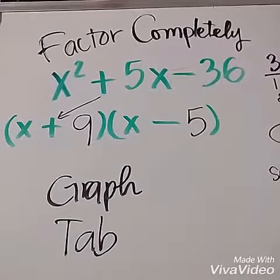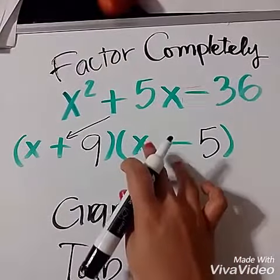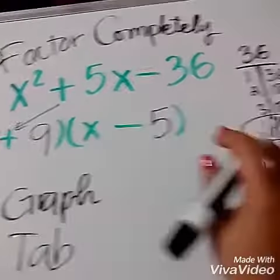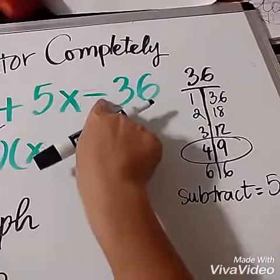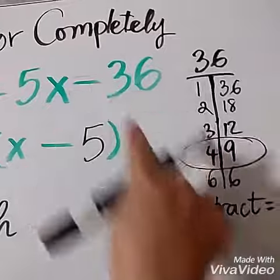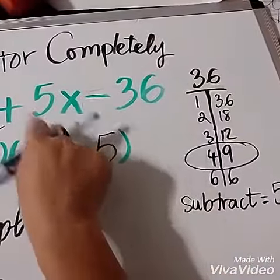Right, again, look at the last sign. If it's negative, they both have different signs - one plus, one minus. Get all the factors. The negative right here, the subtract, means you have to subtract the two numbers to get the middle number, which is the 5 right here.